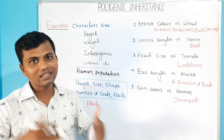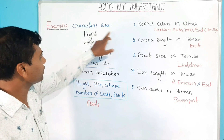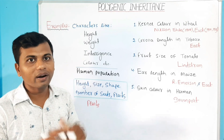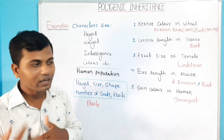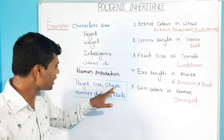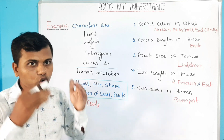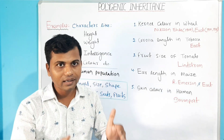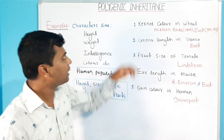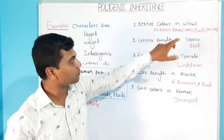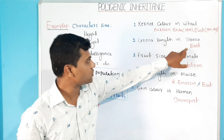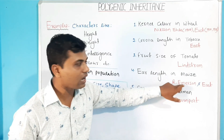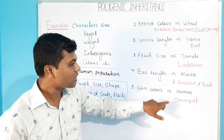Now, come to the common examples of quantitative characters. Characters like height, weight, intelligence, and color are common quantitative characters found in the human population. Whereas plant height, size, shape, number of seeds, and fruits are common quantitative characters found in plants. Among the notable studies: kernel color in wheat was studied by Nilsson-Ehle; corolla length in tobacco was studied by Emerson; fruit size of tomato was studied by Lindstrom; ear length in maize was studied by Emerson; and skin color in human was studied by Davenport.